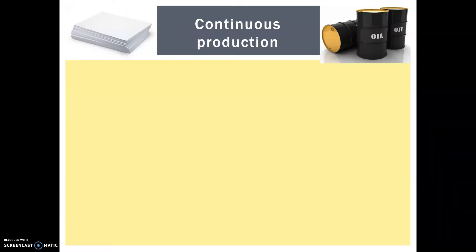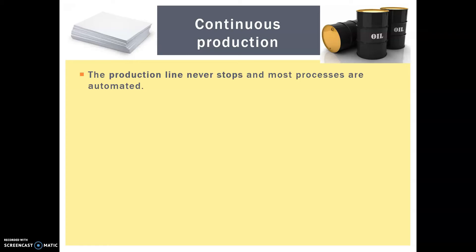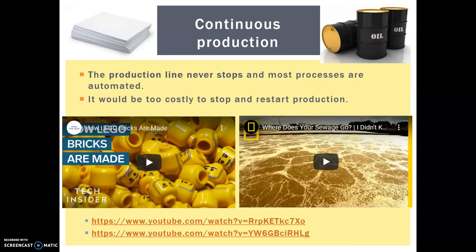Last of all we have continuous production, where the production line never stops and pretty much all the processes are automated but perhaps just overseen by a worker, by a human. It would be way too costly to actually stop and restart that production, so it never turns off. Here I have two examples, one about Lego bricks and one about sewage — sounds pretty gross but it's a really good video, give it a watch.